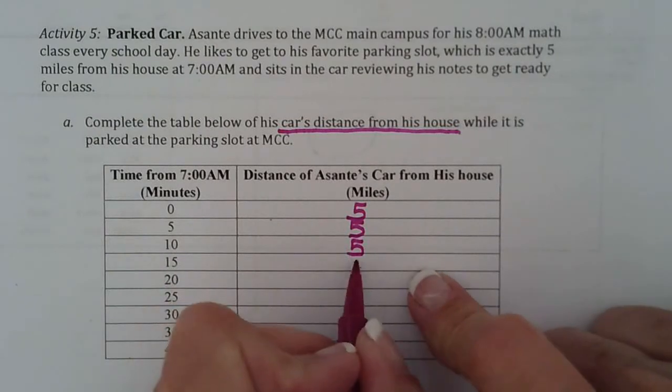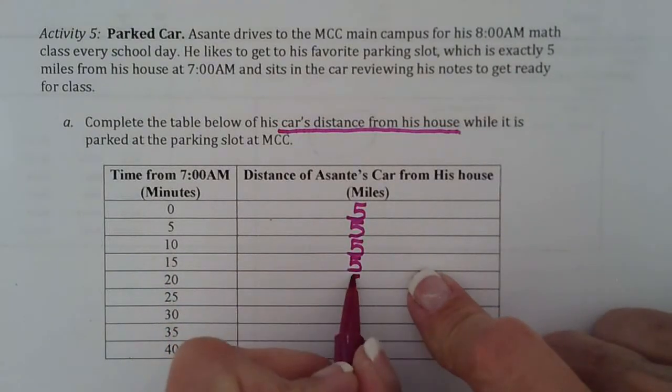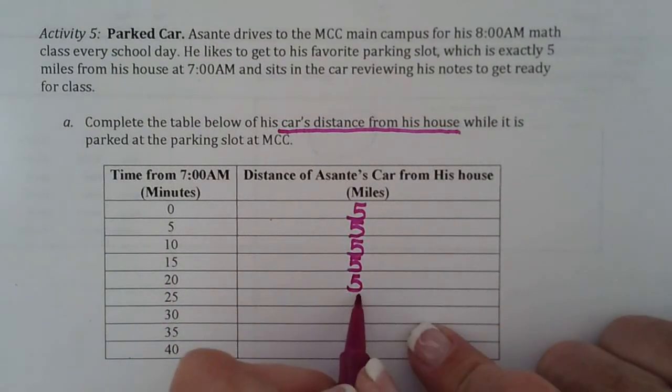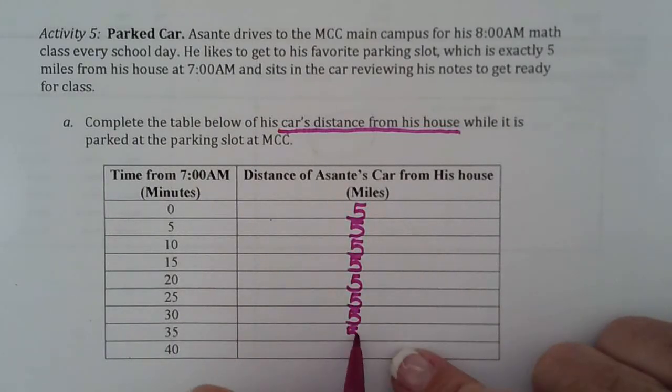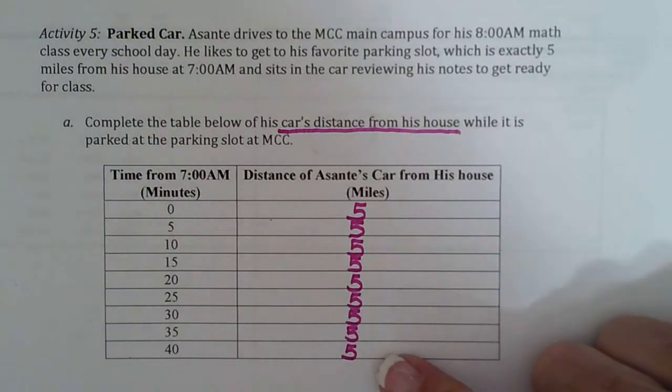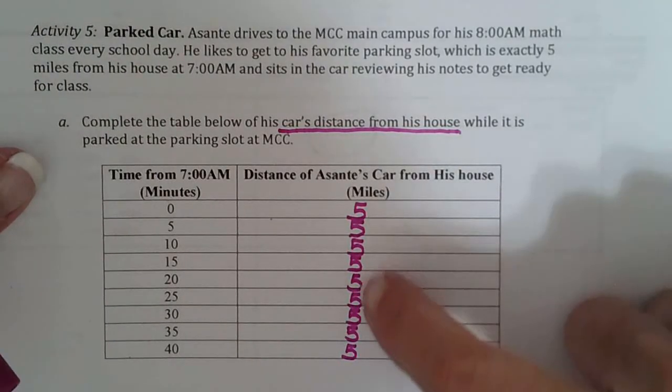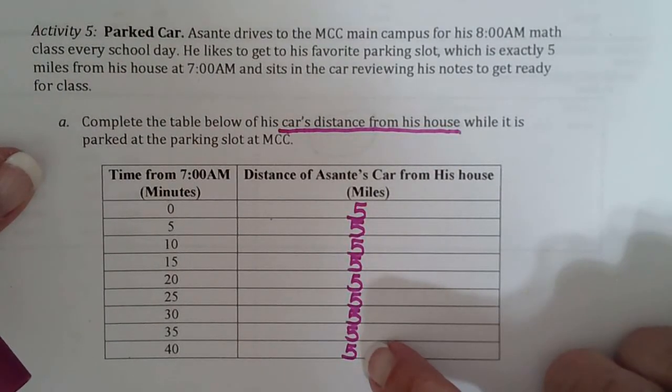So 15 minutes still 5 miles from his house, 20 minutes still in his car, 25 minutes still in his car, 30 minutes still in his car, 35 minutes still in his car, 5 miles from home, 40 minutes, and maybe at 40 minutes he starts walking to class or something. So he sits in his car this whole time reviewing his notes and he remains 5 miles from home.